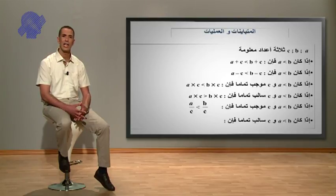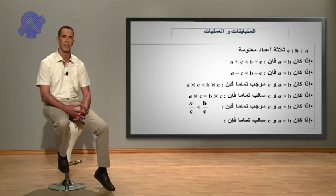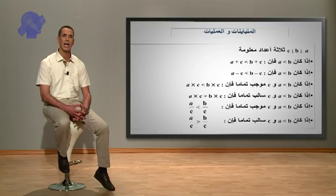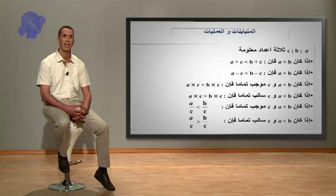إذا كان A أصغر من B و C سالب تماما، فإن A على C يصبح أكبر من B على C. المتراجحات من الدرجة الأولى بمجهول واحد.